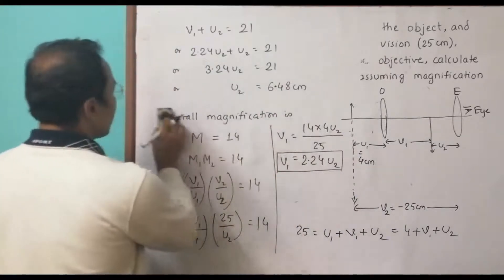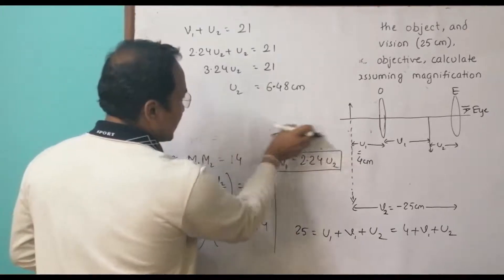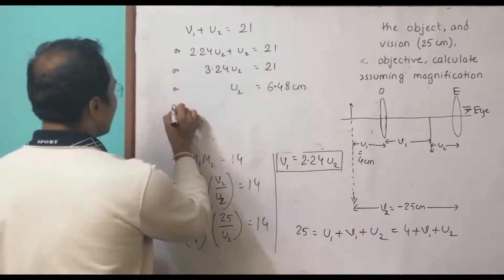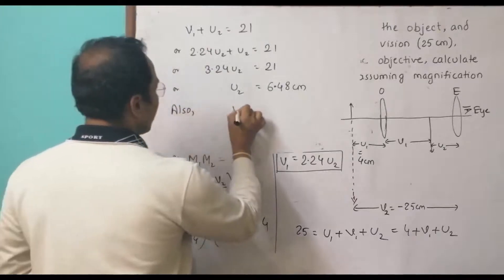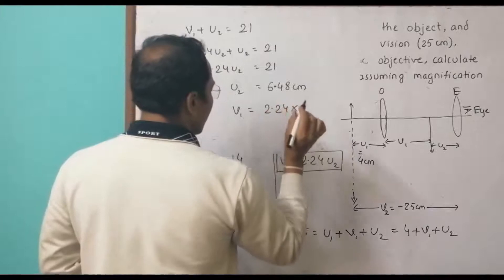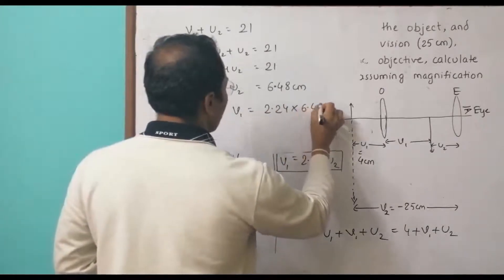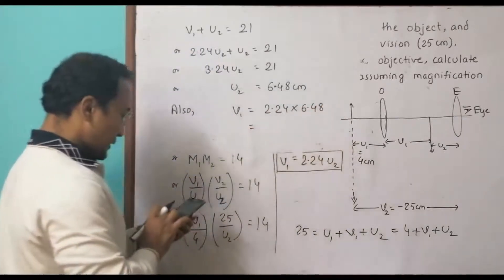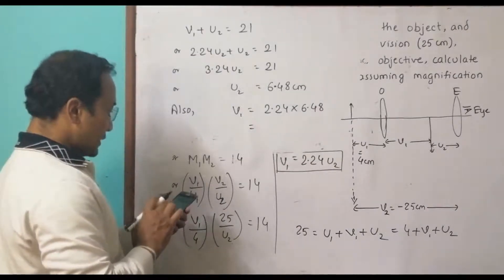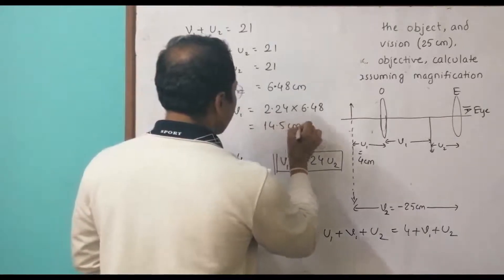Now let's find V1. Since V1 = 2.24 × U2 = 2.24 × 6.48, this gives V1 = 14.5 centimeters. So both U2 and V1 are now determined, along with the known values U1 = 4 and V2 = −25 centimeters.